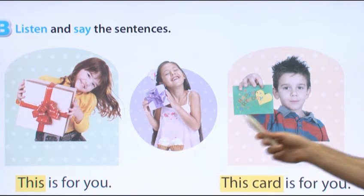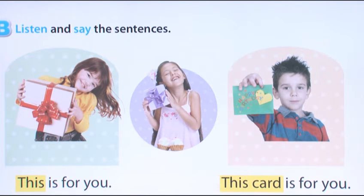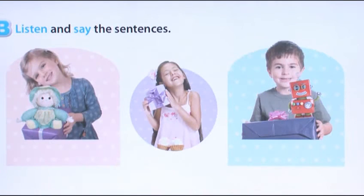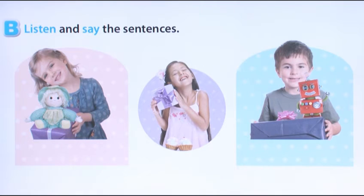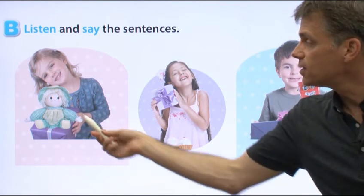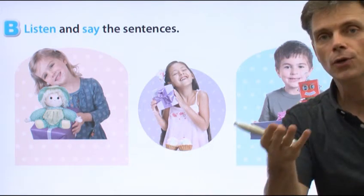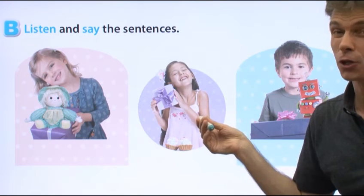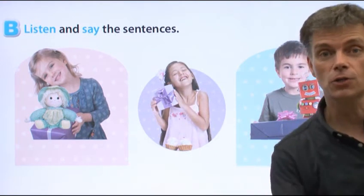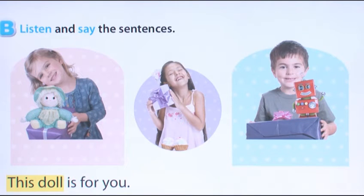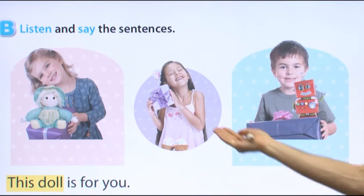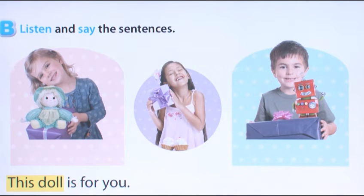She has a gift, he has a beautiful card. Look at this doll — it's a beautiful doll. She says, 'This doll is for you.' She's the birthday girl. This doll is for you. And what does he say? He says, 'This robot is for you.' For the birthday girl — this robot is for you. These are really good friends.